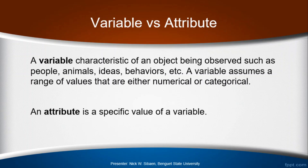Anything that varies within your subjects or a group of objects are called variables. These are characteristics observed from people, animals, or even ideas and behaviors. Just like in mathematics, a variable assumes more than one value. Otherwise, if it has only one value, then it is not a variable but a constant.